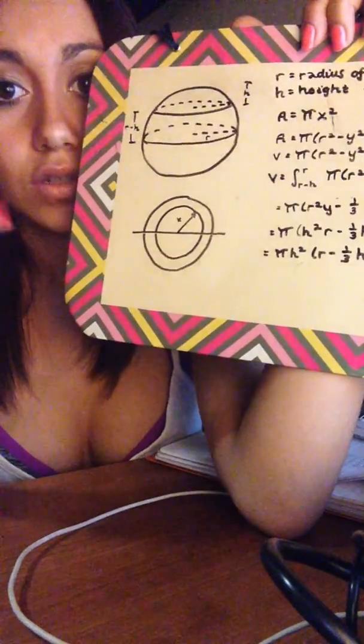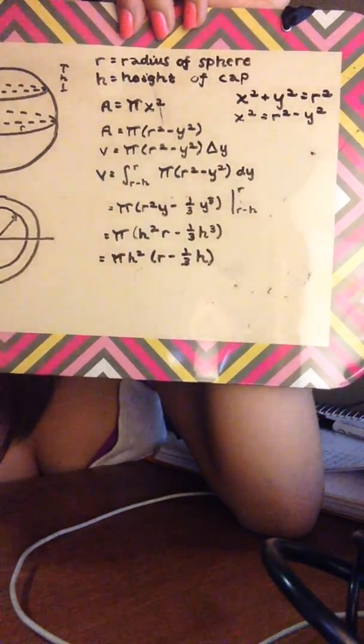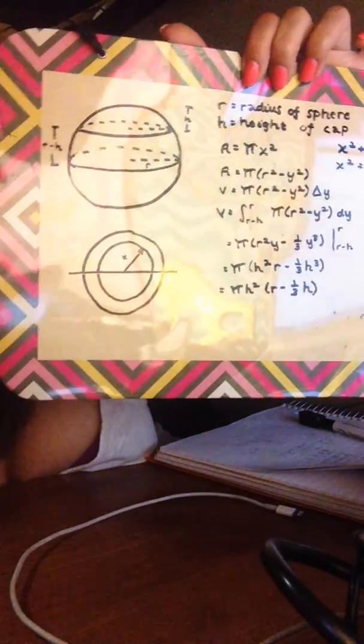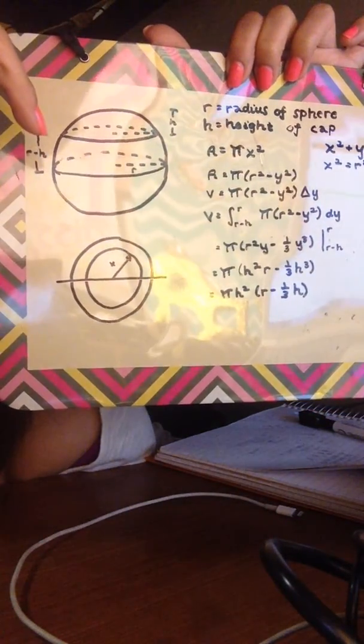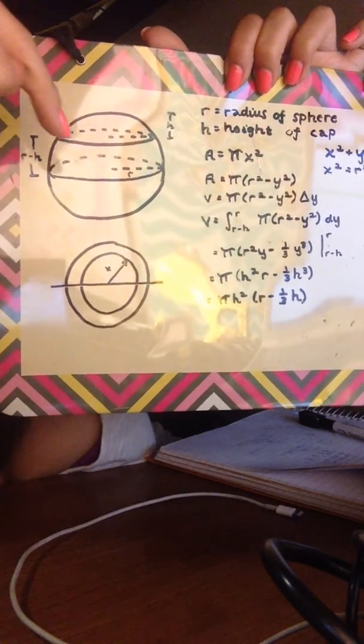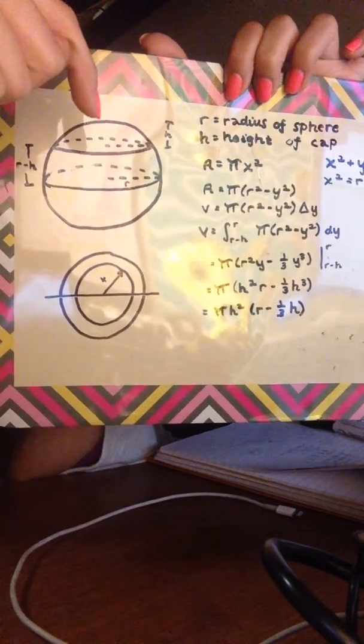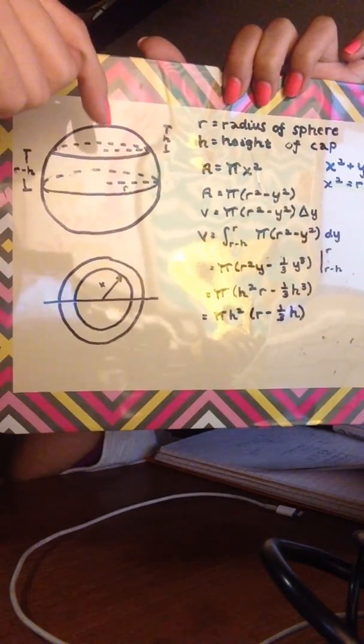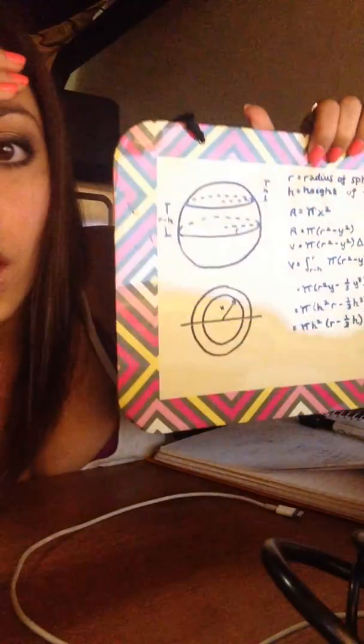And so then you would integrate it from r minus h to r, because r minus h is from right where the cap starts, and then r is from the center to the top of the sphere.